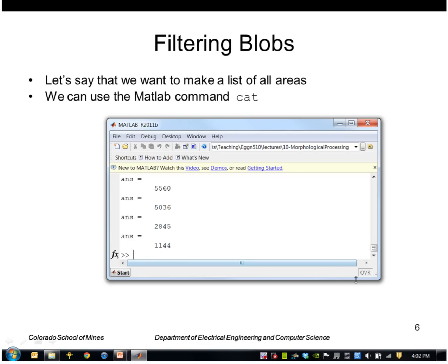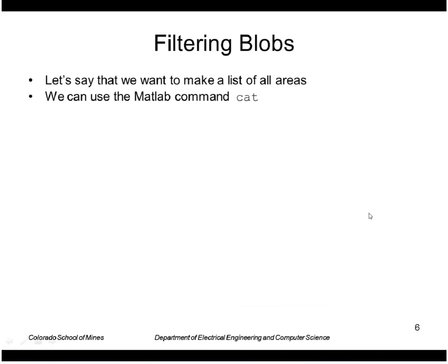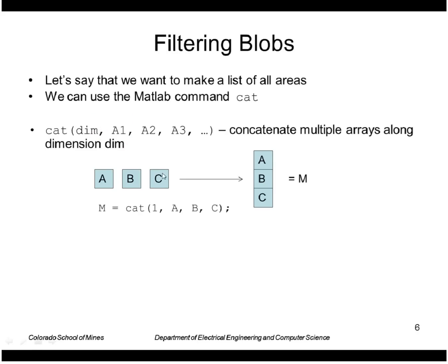Of course I could just type blobs colon dot area. But this does not return a vector. This is just a separate list of elements like that. So what I want to do is put those into an array. I can use cat to do that. The idea is you pass in a list of elements and the dimension along which you want to concatenate them.